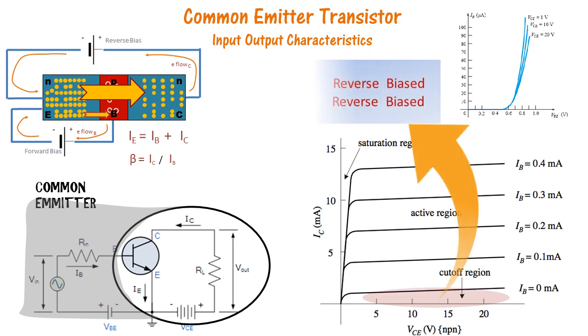In the cutoff region, both the emitter and collector are in reverse bias. The collector, because it has about 15 volts, is understandably in reverse bias.